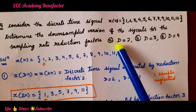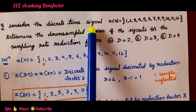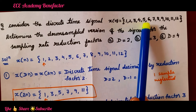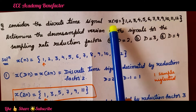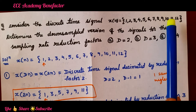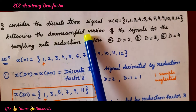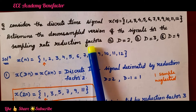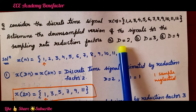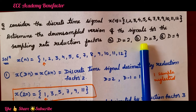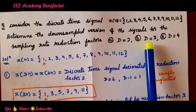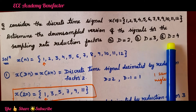The first question is: consider the discrete time signal x(n) = {1, 2, 3, 4, 5, 6, 7, 8, 9, 10, 11, 12}. Determine the down sampled version of the signal for the sampling rate reduction factor D equal to 2, D equal to 3, and D equal to 4.